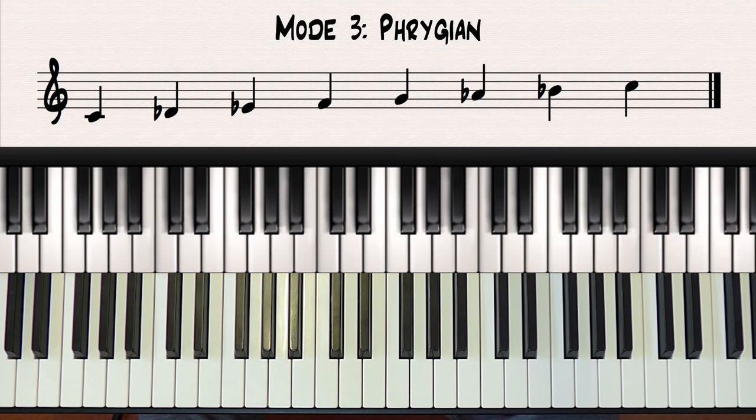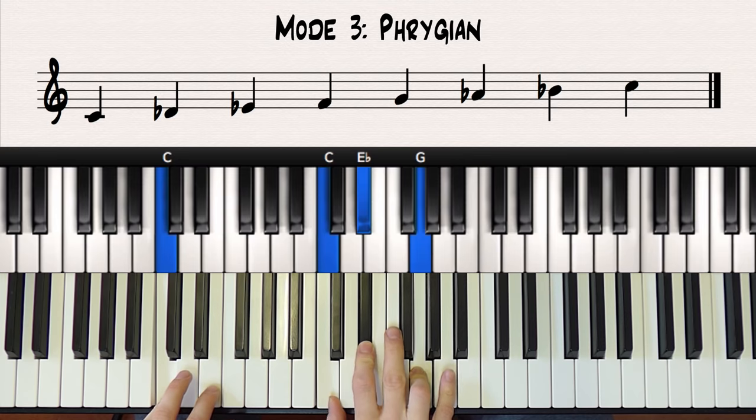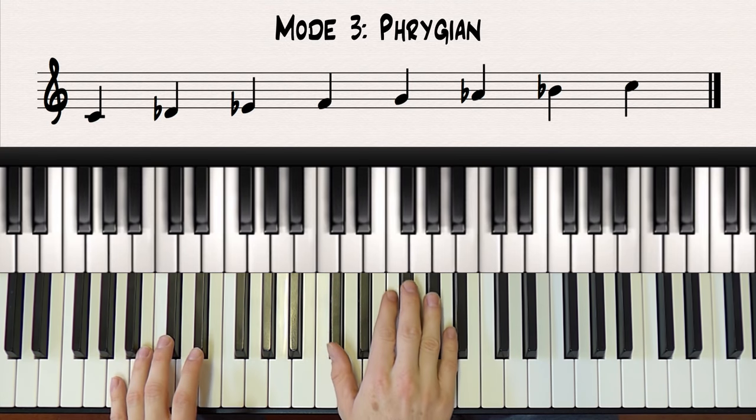The characteristic chords for the Phrygian mode are the minor one chord, so C minor, and also the major flat two chord, D flat major.